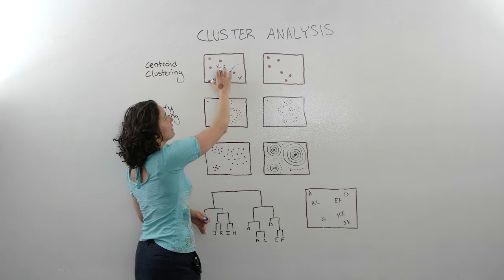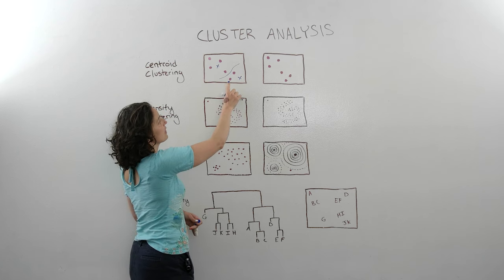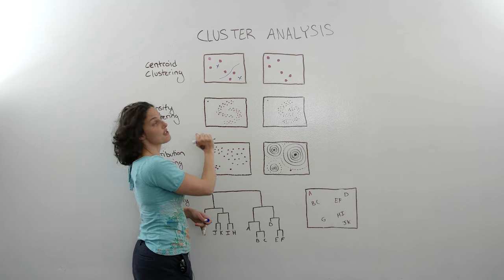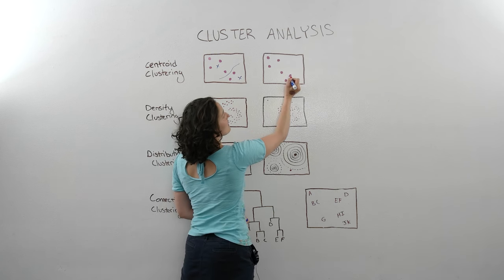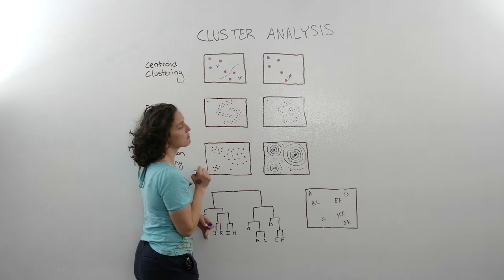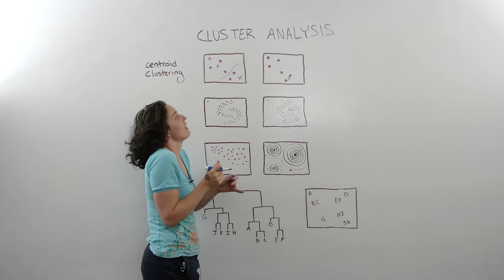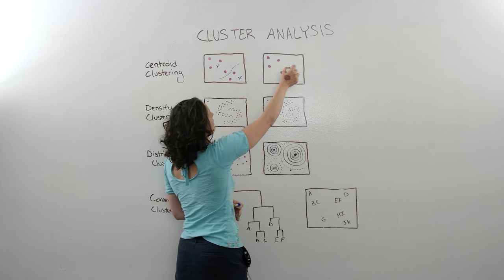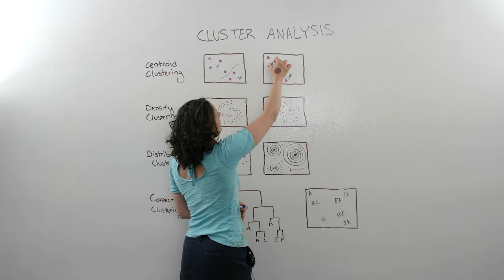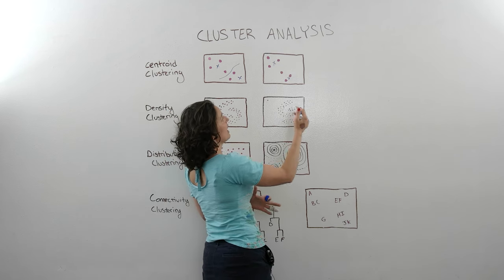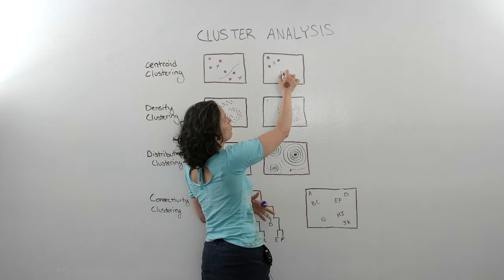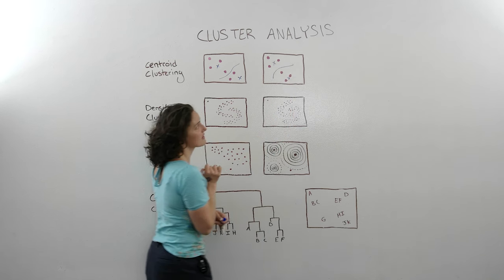And so we're going to recalculate where our centroids are, based on the points that belong to our clusters. So in these two clusters, we're going to reappropriate the centroid right there, because it's between the two points that belong to that cluster. And for this cluster, we're going to move it ever so slightly up here, so that when we recreate the line based on which centroid this point is closer to, it goes like this.